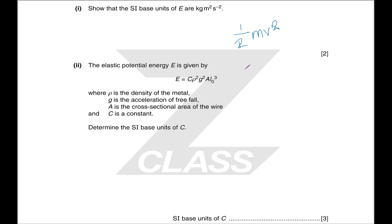For the second part, this is pure dimensional analysis. You want to make the dimensions on each side the same. You know the dimensions of your energy — you were given it earlier. You can figure out the dimensions on this side, and the easiest way is to divide the units of energy by the units of everything apart from C, and get the units of C.